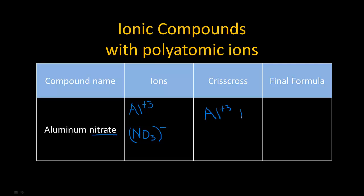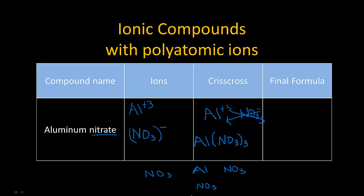We have Al with a plus three charge and NO₃ with a minus one charge. That minus one goes down by the aluminum — we never write ones — and the three goes down by the nitrate. Since there's more than one, we put NO₃ in parentheses with a subscript three. That means one aluminum and three nitrates. The final simplified formula is Al(NO₃)₃.